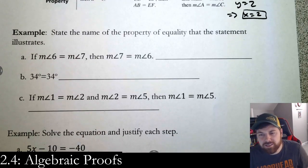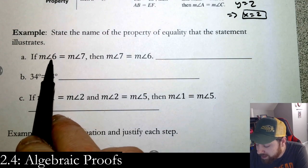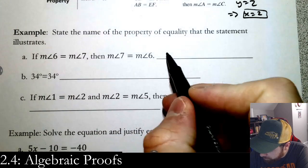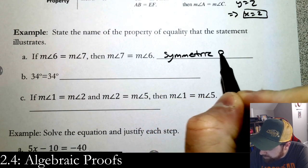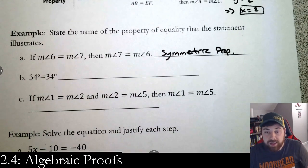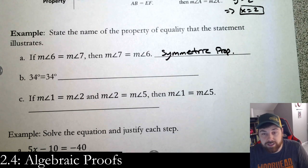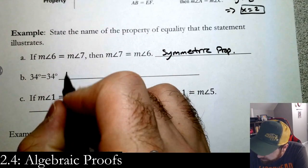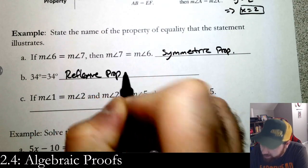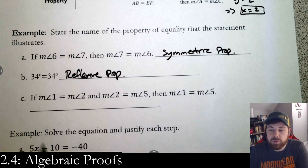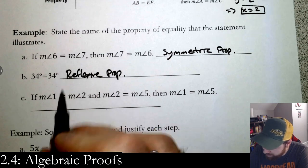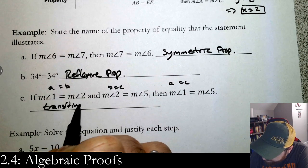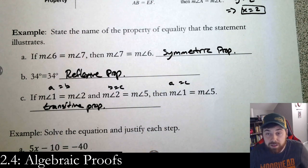Let's use these properties to justify some examples. If the measure of angle 6 equals the measure of angle 7, then the measure of angle 7 equals the measure of angle 6 — we flipped it, so that's the symmetric property. For b: 34 equals 34 — it's equal to itself, that's always the reflexive property. For c: if 1 equals 2 and 2 equals 5, then 1 equals 5 — a=b and b=c so a=c — that's the transitive property.